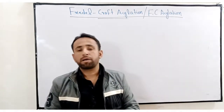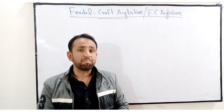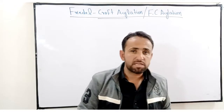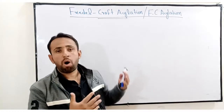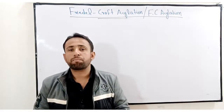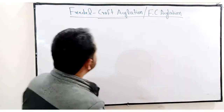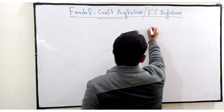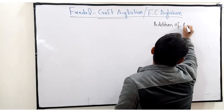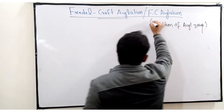We divided the Friedel-Crafts reaction into two types. One was Friedel-Crafts alkylation, in which we replace the hydrogen atom of benzene with an alkyl group. Today we will replace this hydrogen atom of benzene with an acyl group. That is why the process is known as Friedel-Crafts acylation. Acylation means addition of an acyl group. Our electrophile in Friedel-Crafts acylation is an acylium ion.